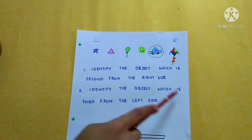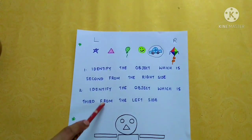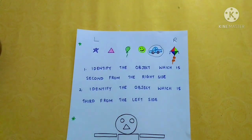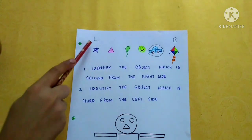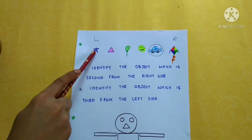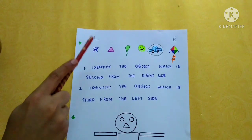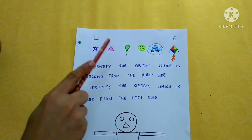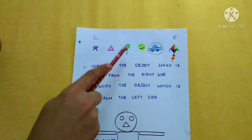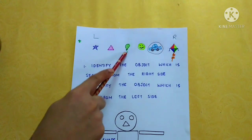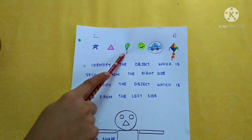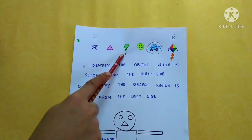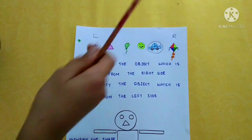Identify the object which is third from the left side. This is the left side. First object, second object, third object — this is the third object from the left side.